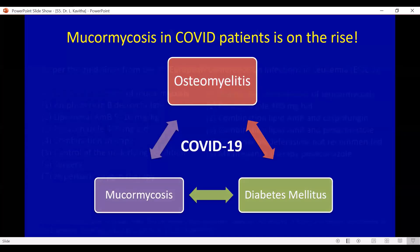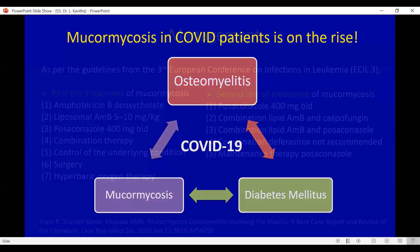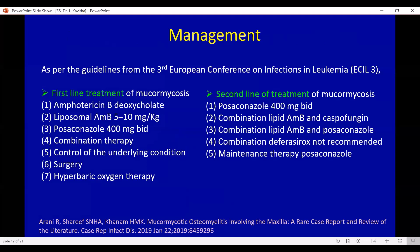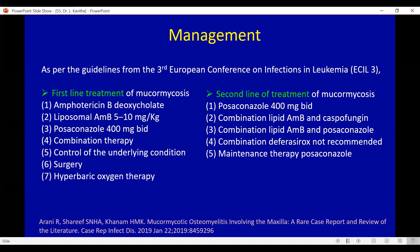Regarding treatment aspects of mucormycosis: the first line of treatment is always Amphotericin B deoxycholate, along with liposomal Amphotericin B, which can be given as combination therapy based on associated comorbidities. The second line of treatment, along with Amphotericin B, includes Isavuconazole antifungals and Caspofungin. These are the references. Thank you for your attention.